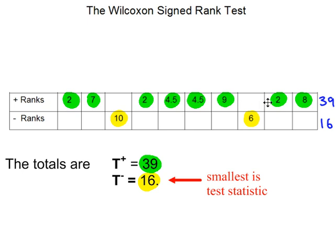Just add up all of the ranks in the top row, that gives you 39. Add up all the ranks in the bottom row, that gives you 16. From these two totals, the smallest value is always the test statistic, so that's 16 in this case.